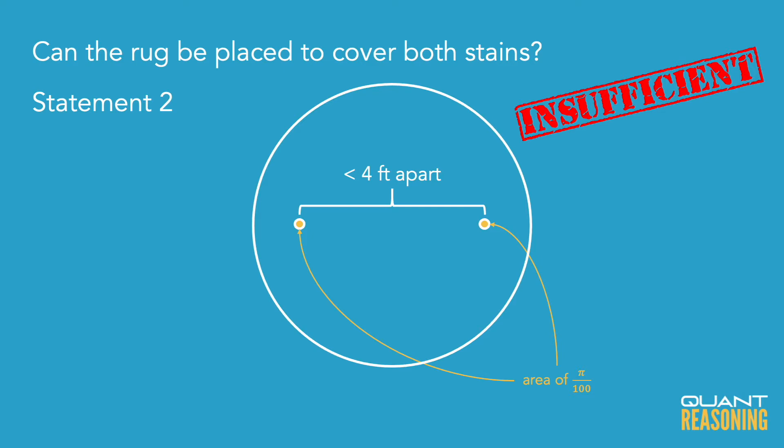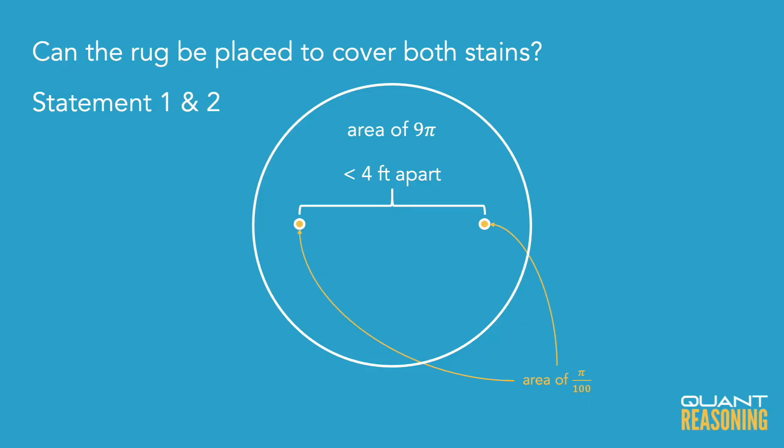When we combine both statements, we do have to do a little bit of math just to confirm, because we have an inequality. If we knew exactly how far apart the two stains are and exactly how big the rug is, we wouldn't need to do any math — we'd have all the information we could possibly want. But in this case, we don't have the exact distance between the stains; we just have an upper limit. So we have to confirm that within the range of possibilities — from the stains touching each other on one extreme, to the centers being 3.99999 feet apart on the other — the rug always covers both stains.